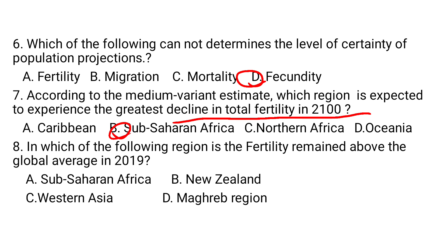Question 8: In which of the following regions did fertility remain above the global average in 2019? A. Sub-Saharan Africa. B. New Zealand. C. Western Asia. D. Maghreb region. Sub-Saharan Africa is the region where fertility remained above the global average in 2019, at approximately 4.6, followed by Oceania at 3.4. The answer is A.